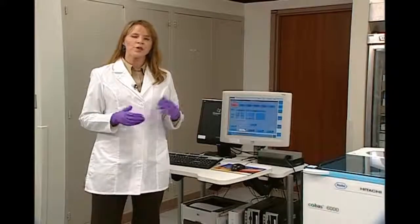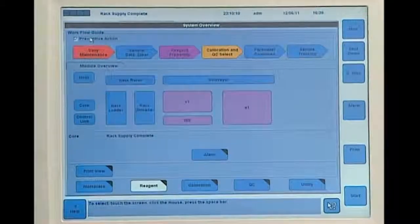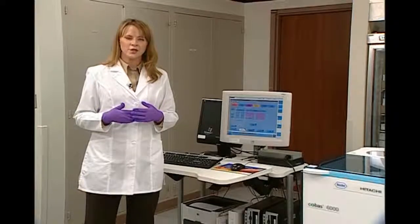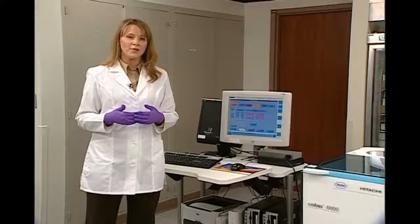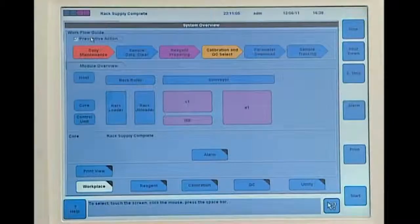To print this report, we're going to go to the system overview screen and select a feature called preventive action. That's going to turn on the purple alarm. The software is going to look at the entire reagent inventory and determine whether or not we have enough reagent to get through a full 24-hour period. So now I'm going to actually print that report.